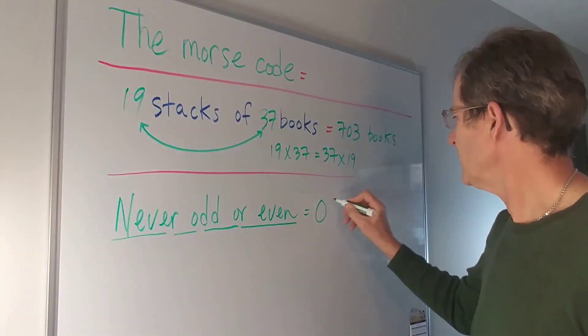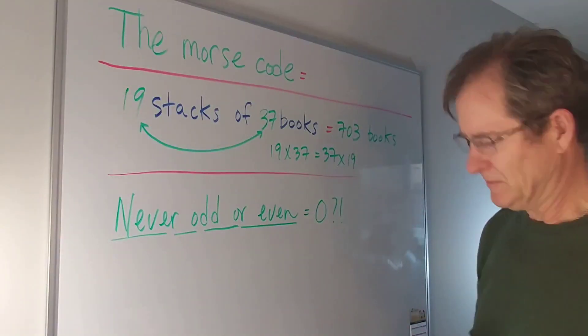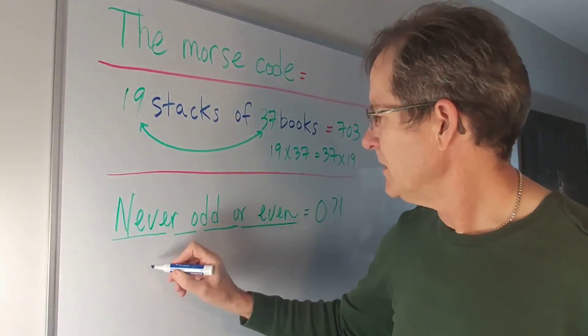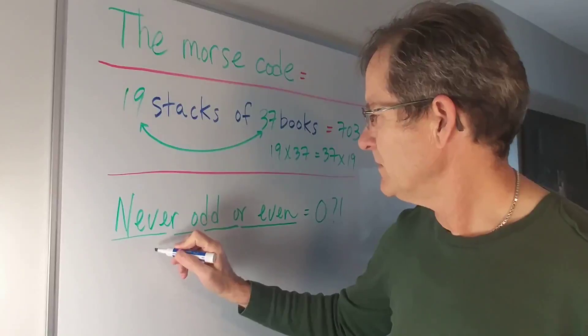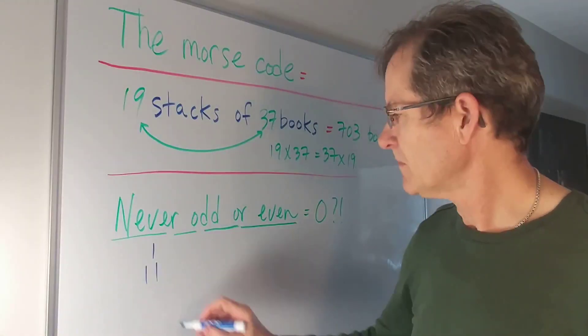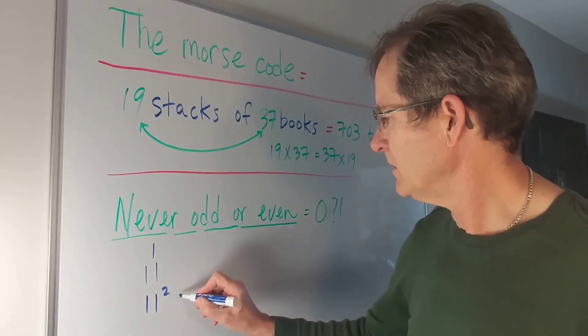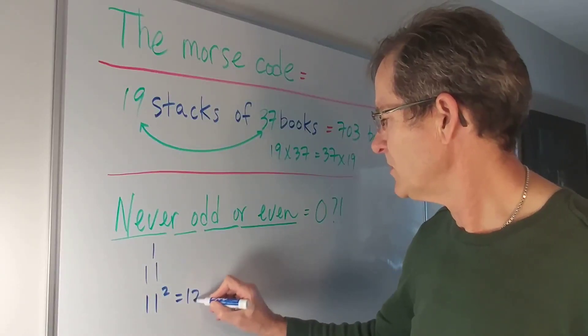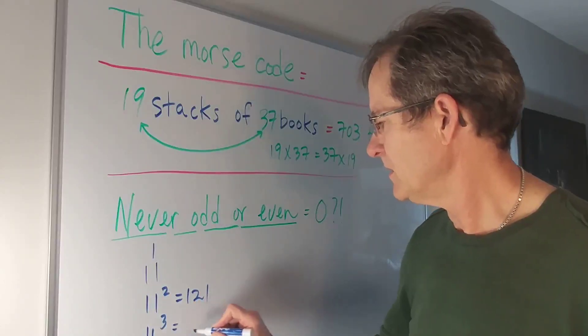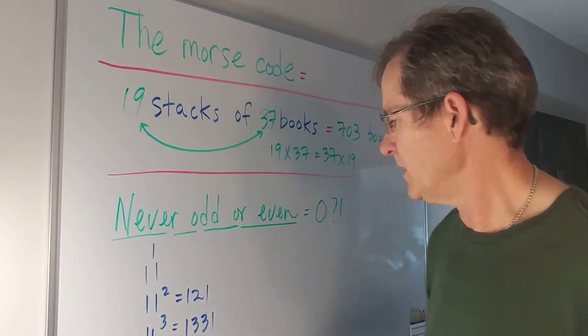I don't know, would that be the number zero? What about some other mathematical palindromes? Let's say you have, kind of obvious, the number one, and eleven. What about eleven squared? Sure enough, that's 121, still a palindrome. Eleven cubed. Indeed, one three three one.